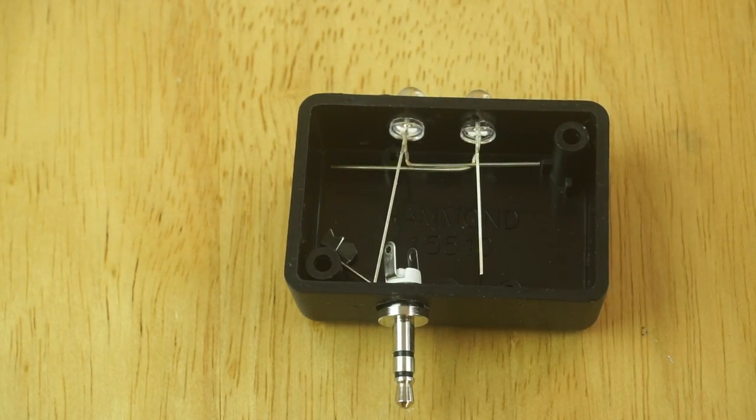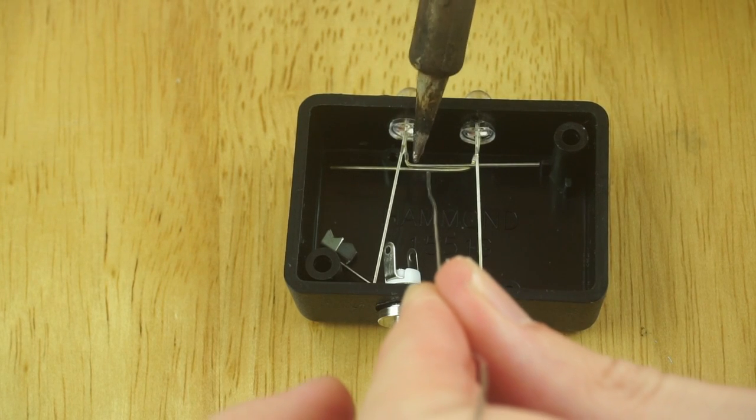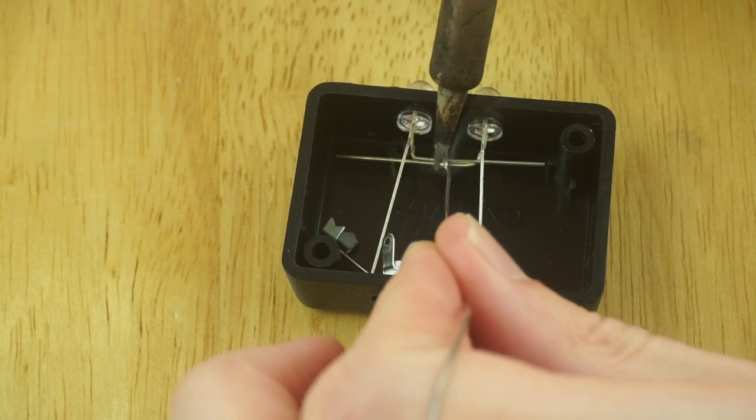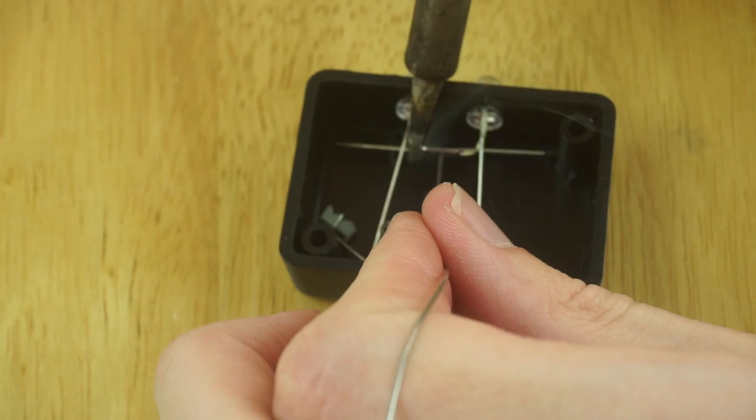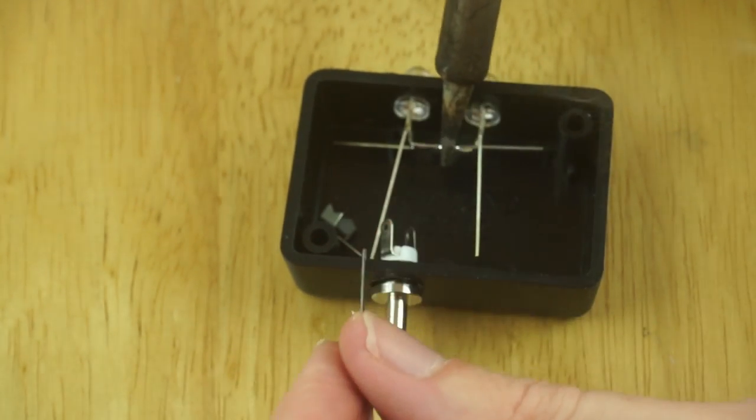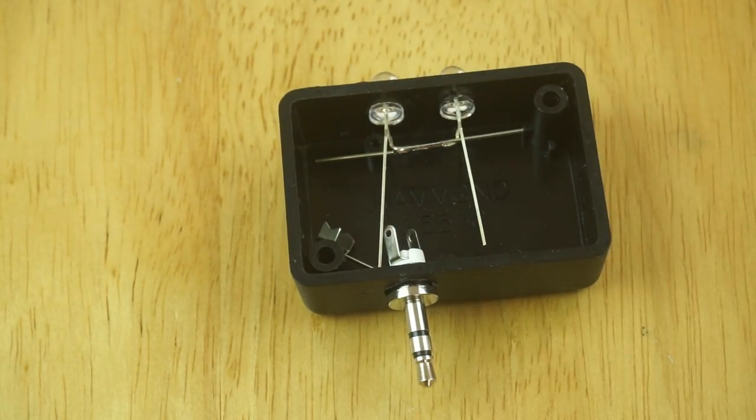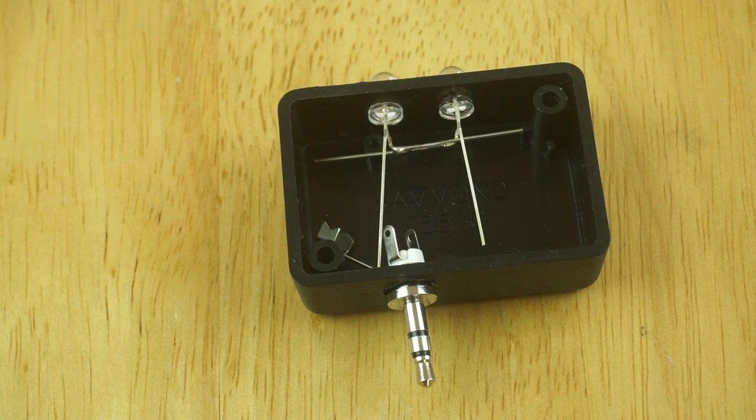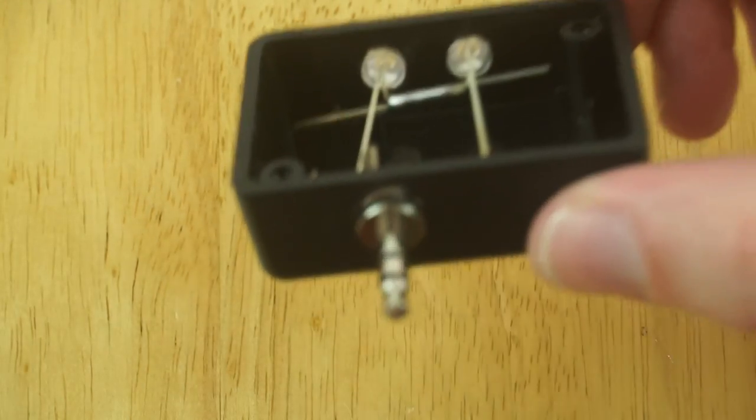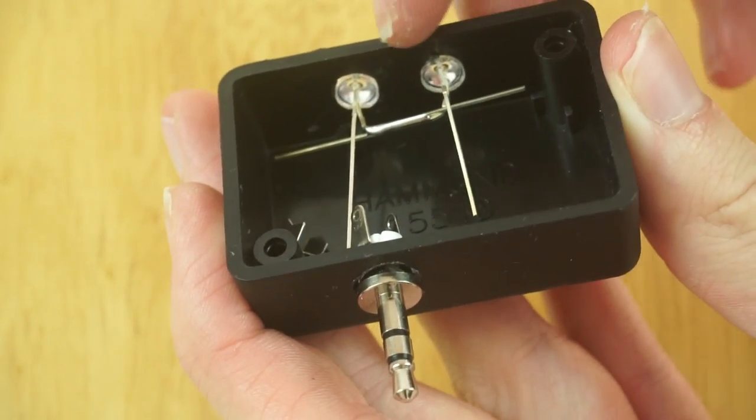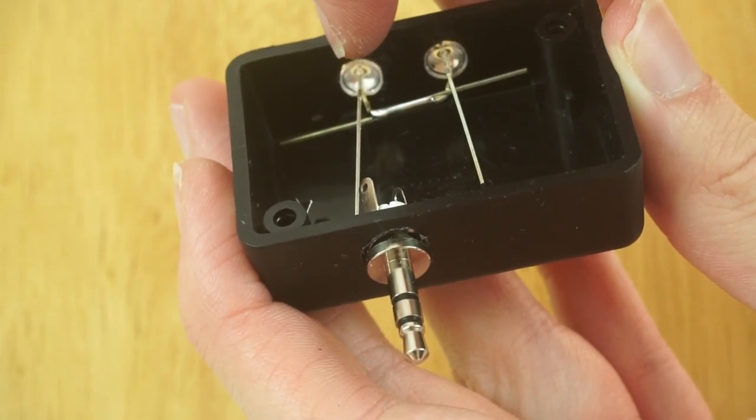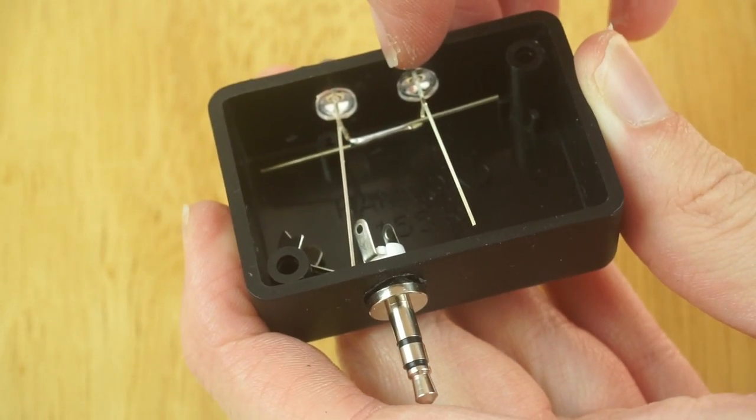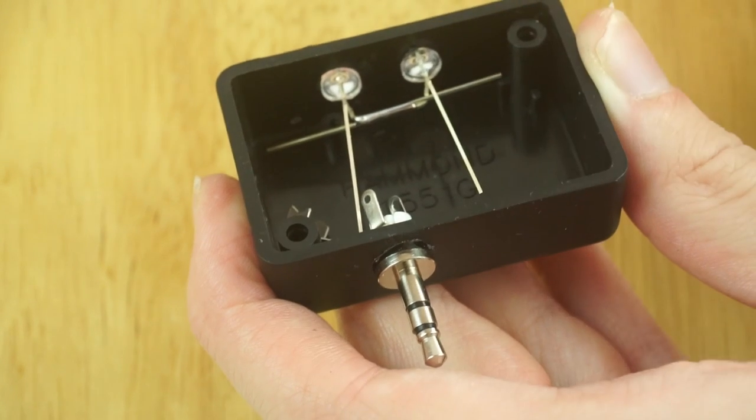So hopefully that's relatively easy, and that'll work. There we go. So there we go. That's the bottom two legs connected together. So the anode of one LED is connected to the cathode of the other one. So all I need to do is do the same for the top ones.